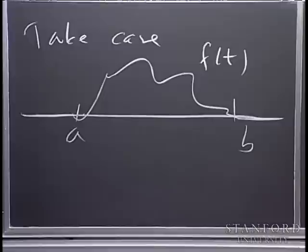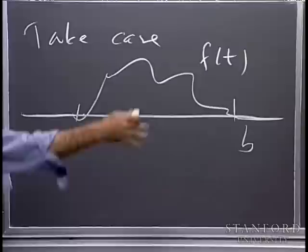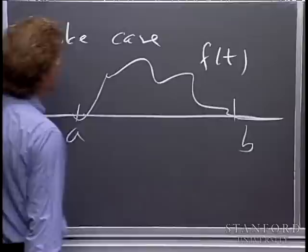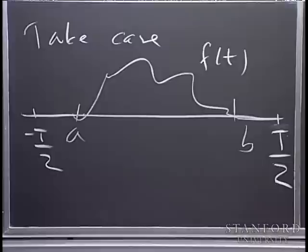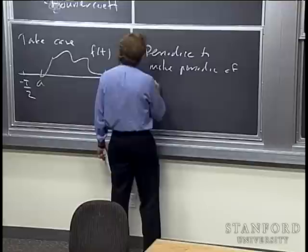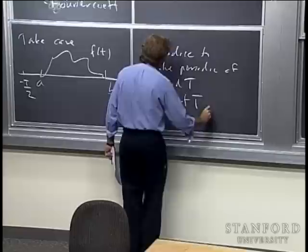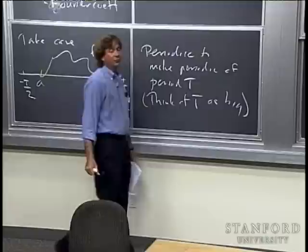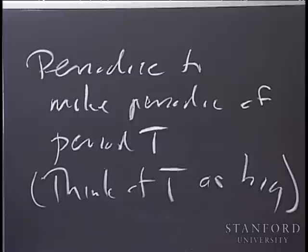So I take a case where you have some function f of t which is zero outside some interval — I'm drawing it like it's positive, but it can be very general. Then I periodize it: I take a very big interval, capital T, and look at it from minus T over 2 to T over 2 as one complete period. Then I periodize the function so the pattern repeats.